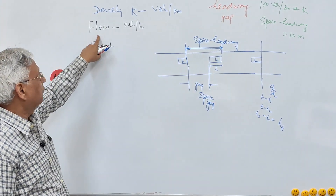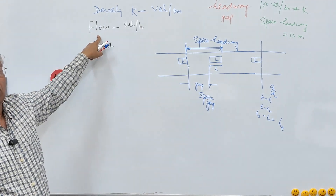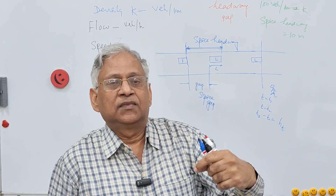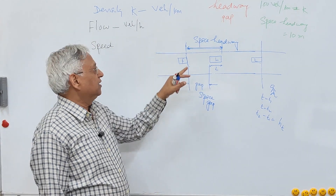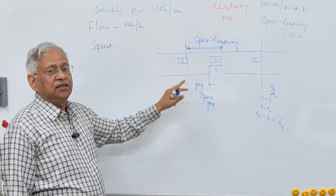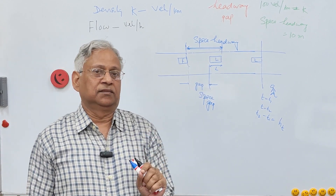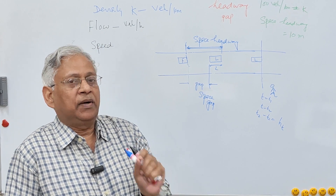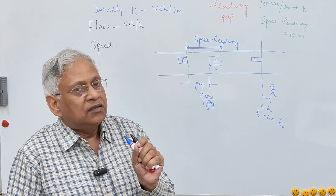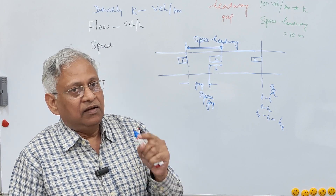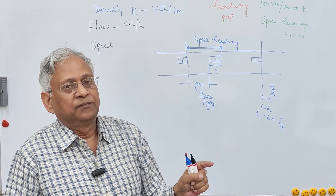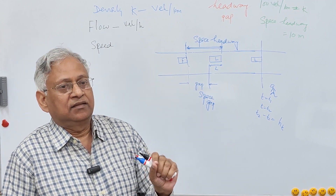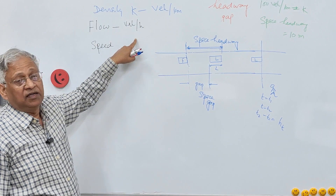Going back to the definition of flow: if 1800 vehicles pass a reference line in one hour, on average there will be one vehicle every two seconds. So the time headway between two vehicles will be two seconds. This means flow is the inverse of time headway.